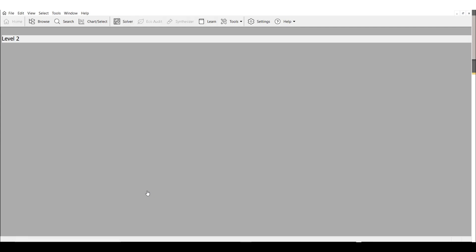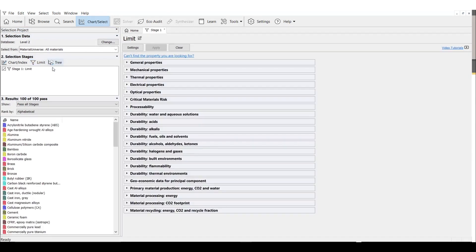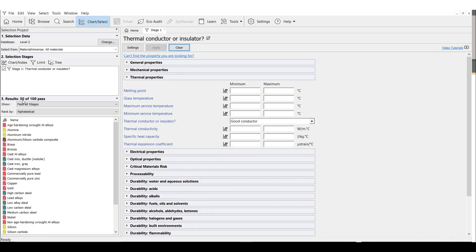Once again, opening our level 2 database, we're going to start with a limit stage to screen our materials. First, let's apply our thermal conductivity constraint. We can see that this drops our available materials from 100 down to 30.